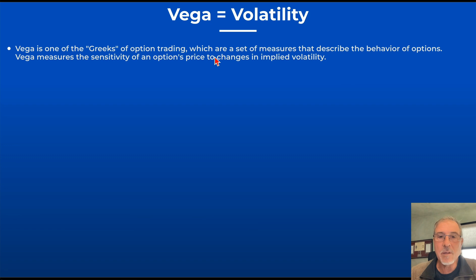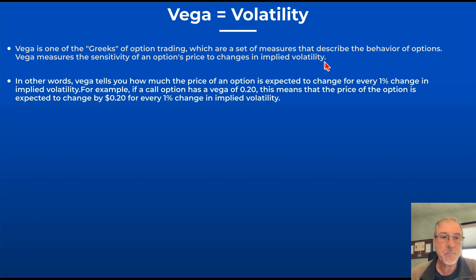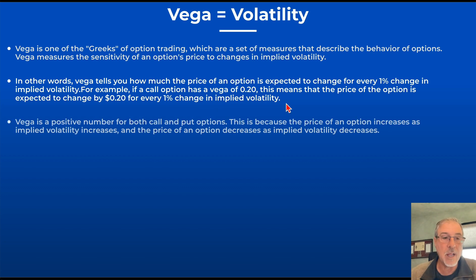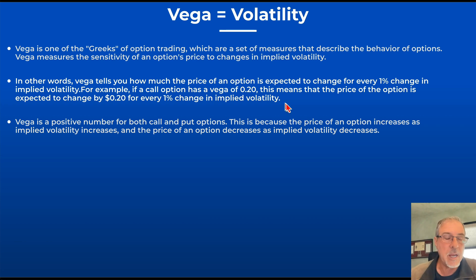Vega is one of the Greeks — a set of measures that describe the behavior of options. Vega measures the sensitivity of an option's price to changes in implied volatility, telling you how much the price of an option is expected to change for every 1% change in implied volatility. If a call option has a vega of 0.2, the price of the option is expected to change by 20 cents for every 1% change in implied volatility. We're going to go into the lab using OptionStrat and look at what this means in P&L diagrams.